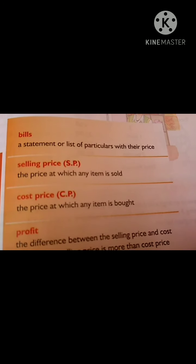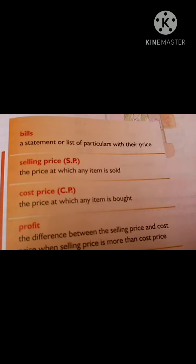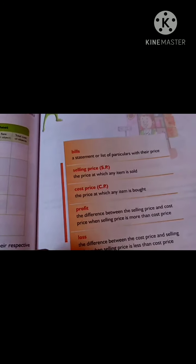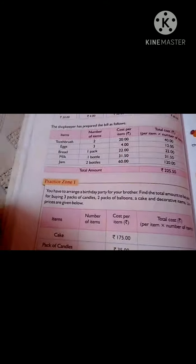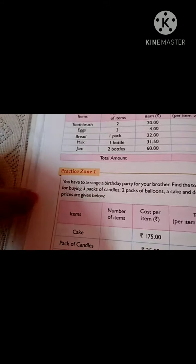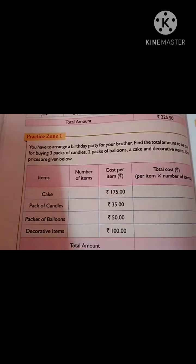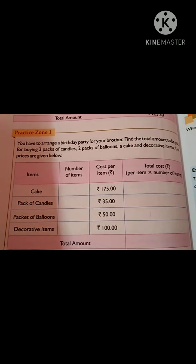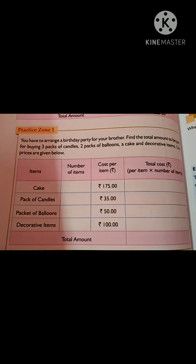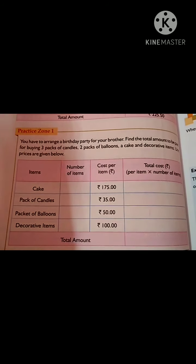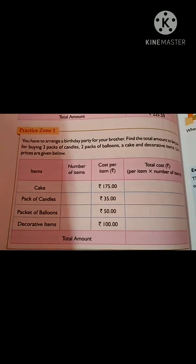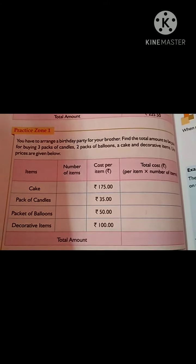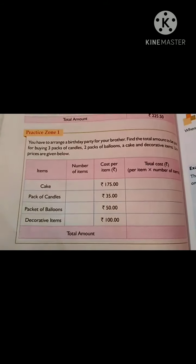Bill means a statement or list of particulars with their price. So here in Practice Zone number one, you are going to prepare a bill. You have to arrange a birthday party for your brother. Find the total amount to be paid for buying three packs of candles, three packs of balloons, a cake and decorative items. Unit prices are given below here.